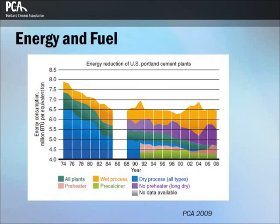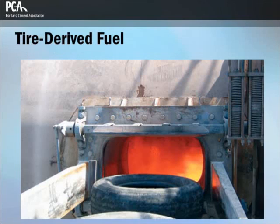This figure shows energy consumption data from 1974 to 2008. The cement industry has improved energy efficiency by 37% from 1972, with the average energy input required being 4.53 million BTU per metric ton. In 2007, the energy obtained from waste fuels increased to 9.4% of the total energy demand at cement plants. Tires have 25% more fuel value than coal on an equal mass basis, and approximately 300 million used tires are generated annually in the United States.